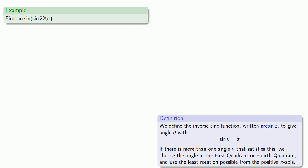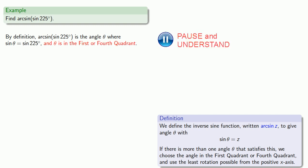So by definition, arcsine of sine of 225 degrees is the angle theta, where the sine of theta is the same as the sine of 225 degrees, and theta is in the first or fourth quadrant. So first, let's draw an angle of 225 degrees in standard position.